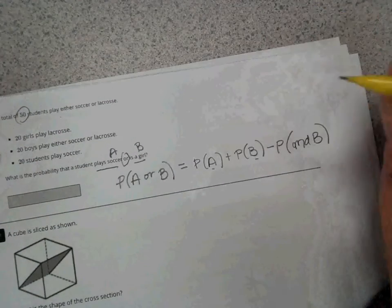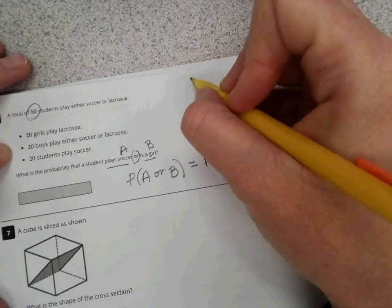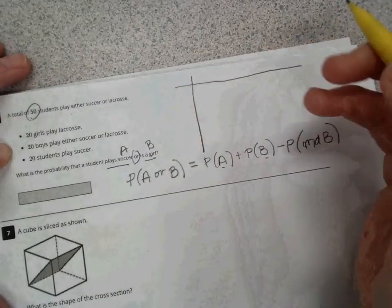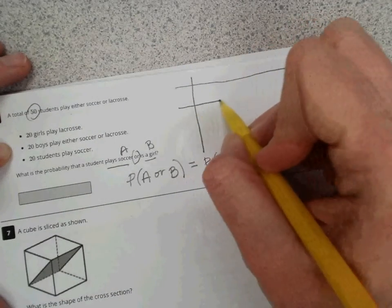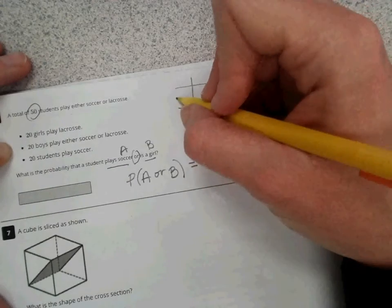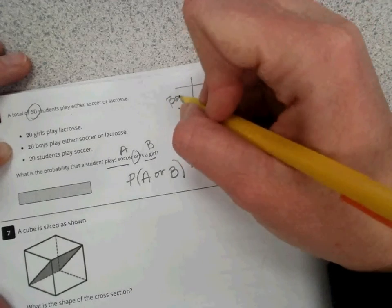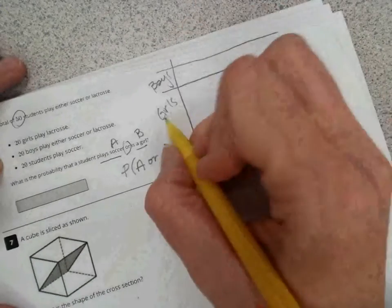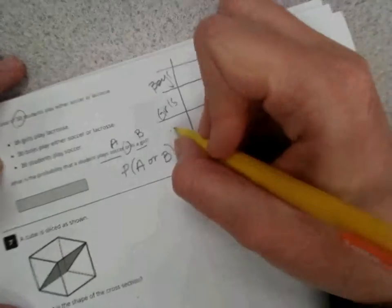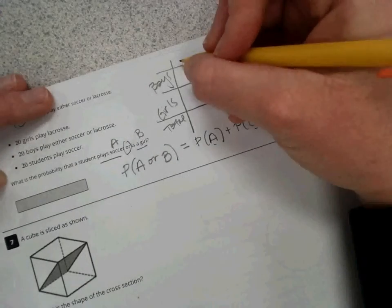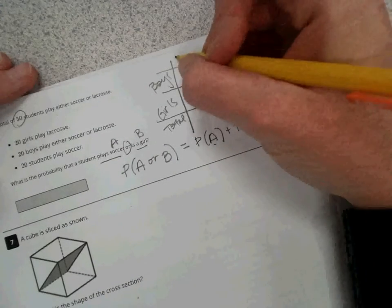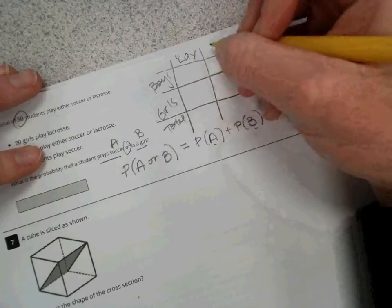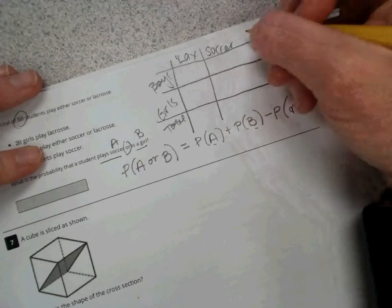A good strategy for this problem is to just go ahead and create a two-way table. So since we have two different variables going on here, we have boys, girls, and we'll have to include a row for our total. Then we've got our two sports here: lacrosse, soccer, and our total.